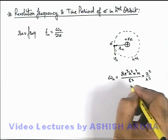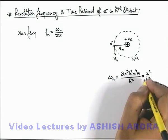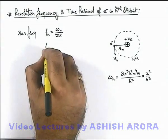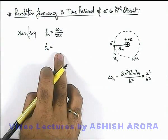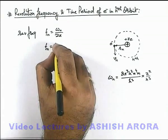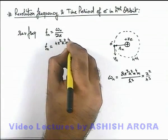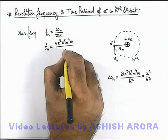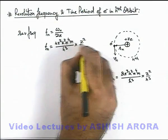In just the previous section we have calculated the value of omega_n. If we substitute the value of omega_n, the revolution frequency of electron will be omega_n over 2π. And on simplifying, we are getting it 4π² k² e⁴ m by h³ multiplied by z² over n³.